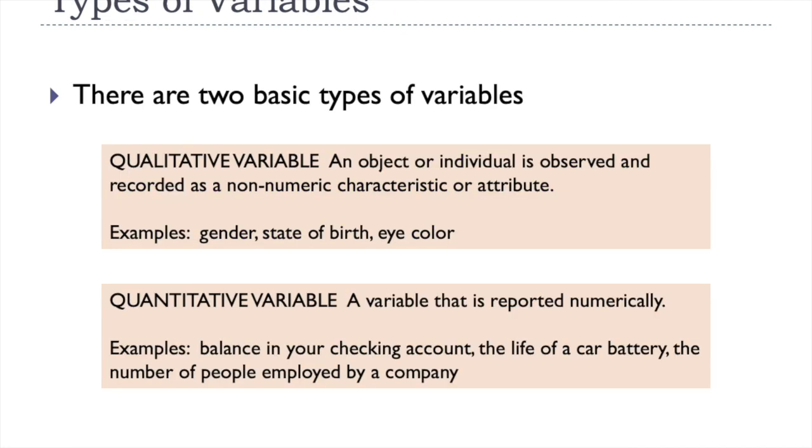When it comes to our variables, we have these two very broad categories of types of variables, qualitative and quantitative. So again, hopefully you're familiar with these definitions, but if not, look through this more closely in the textbook. Qualitative is something that we observe and then record, but it's usually a non-numeric characteristic or attribute that someone might have. So a person's gender, the state in which they reside or were born, what is their eye color. Those are all qualitative variables. Quantitative variables are reported numerically. And so, you know, how much money you have in an account, the number of people in your family, all of those are quantitative variables.